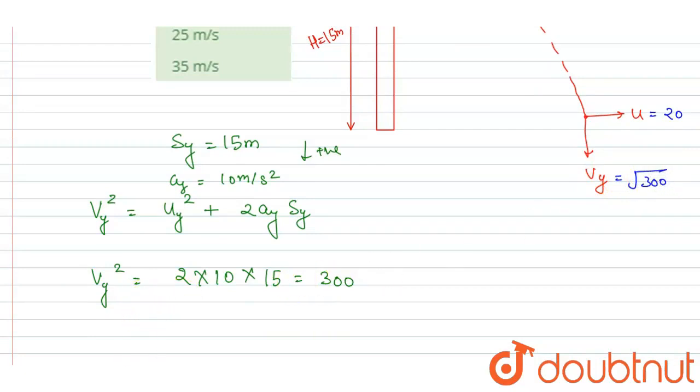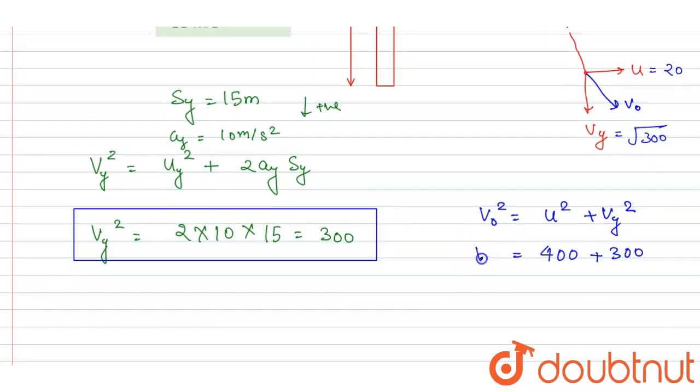If you see, vy is under root 300, so I can write down this net velocity with which it will hit the ground is v naught. So we can write down from the Pythagorean theorem that it will be equal to u squared plus vy squared.